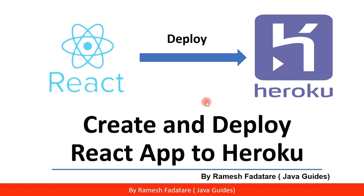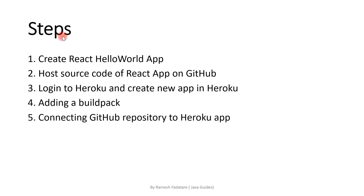We're going to follow very simple steps. Here are the steps: first we'll create a new React Hello World application, then we'll host the source code of the React application on GitHub. Next we log into Heroku and create a new app in Heroku, then we add a build pack to Heroku, and then we'll connect a GitHub repository to the Heroku app.